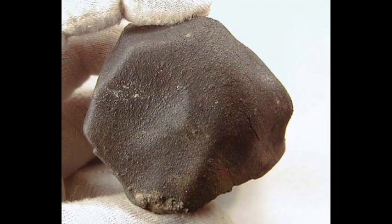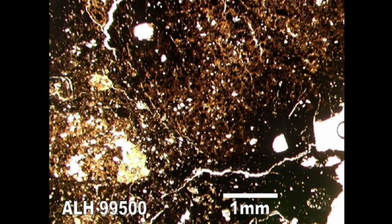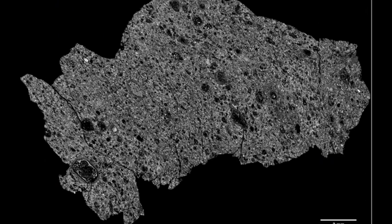CM carbonaceous chondrites are a type of meteorite named after the town of Mighei in Kherson Oblast, Ukraine, where the first CM specimens fell back in 1889, although the most well-known example is the Murchison meteorite, which fell in Australia in 1969. These meteorites are classified as type 2 and are the earliest carbonaceous chondrites to display chondrules. The chondrules are tiny and dispersed throughout a black opaque matrix.